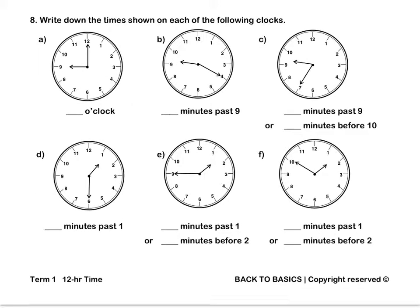Question 8. Write down the times shown on each of the following clocks. For A, the hour hand is on the 9 and the minute hand is on the 12, so it is exactly 9 o'clock. For B, the minute hand is now on the 4 so it is 20 minutes past 9. For C, the minute hand is now on the 7 and the hour hand is in between the 9 and the 10. So it is 35 minutes past 9, or we can say in 25 minutes time it is going to be 10 o'clock, so it is 25 minutes before 10. Pause this video to complete question 8.